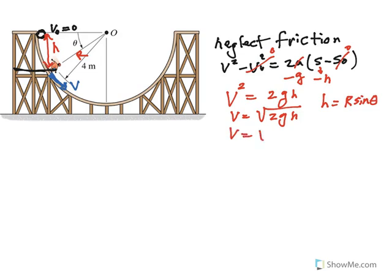So basically, velocity would be square root of 2gr sine theta. Of course, this is assuming there is no friction. Okay, so let's draw a free-body diagram. Actually, let me go ahead and erase this here, since I don't need them.